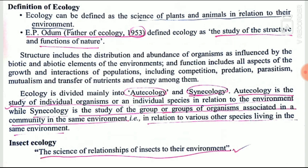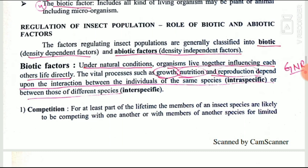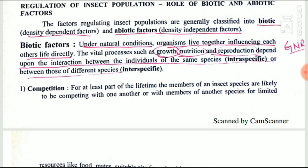Insect ecology is the science of relationships of insects with their environment. Next comes the regulation of insect population and the role of biotic and abiotic factors. The environment consists of two types of factors: biotic and abiotic. Biotic factors are all those associated with living organisms, and abiotic factors are physical factors or physical components like air, water, soil, light, and temperature.